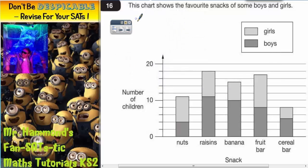Question 16 says this chart shows the favourite snacks of some boys and girls and we've got a key. Girls is light grey and boys is dark grey. The different snacks are nuts, raisins, banana, fruit bar and cereal bar, and the number of children up the side.